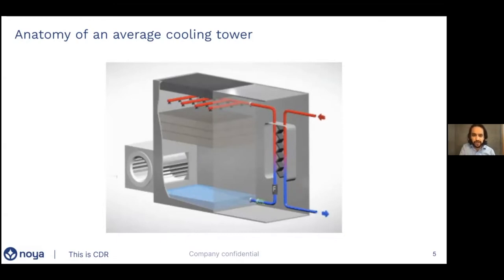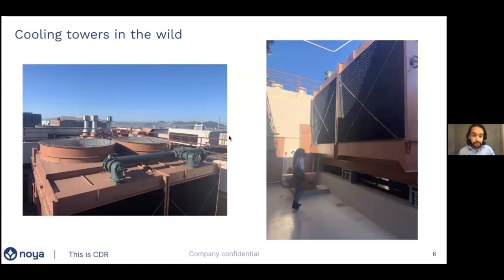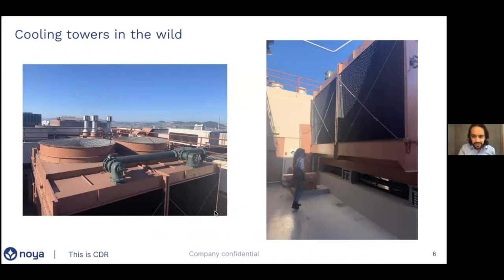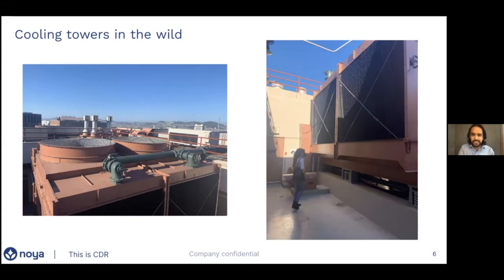Here are some pictures we took on top of one of the buildings that has signed onto our waitlist. On the left you can see the big fan — in this specific piece of equipment, air comes in through the side and gets ejected out of the top. This is our chemist Loreen, and you can see the scale of the equipment. On the grand scale of cooling towers this is about middle of the road — they get much bigger and also much smaller. This is very common for what you might see on top of an industrial or commercial building in San Francisco or New York City.